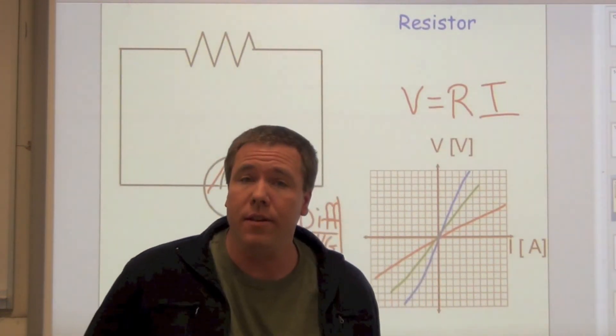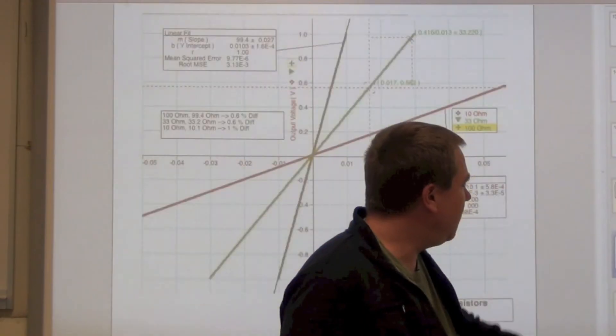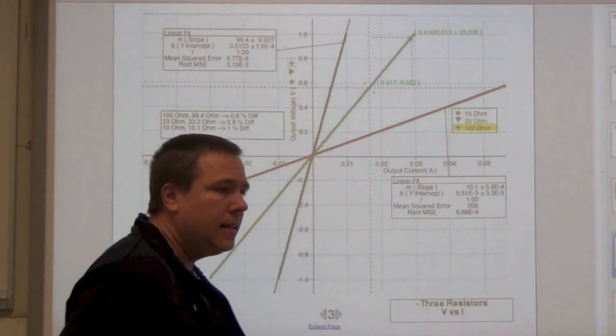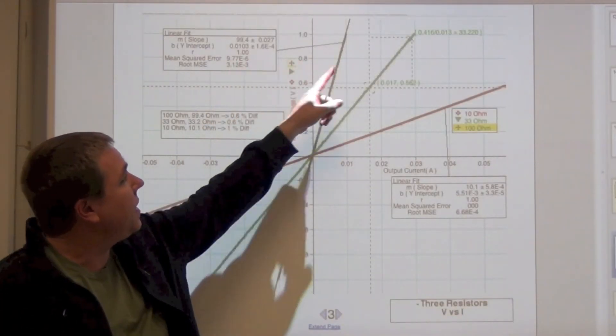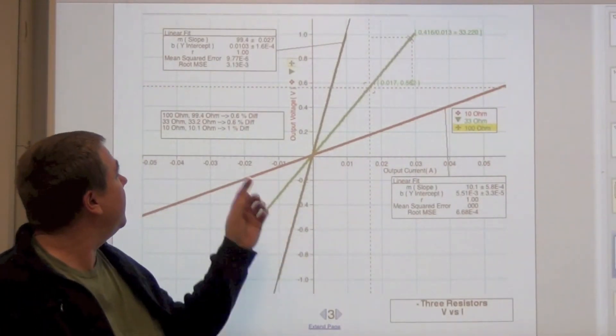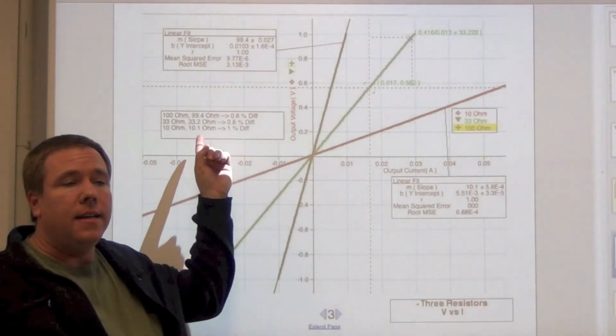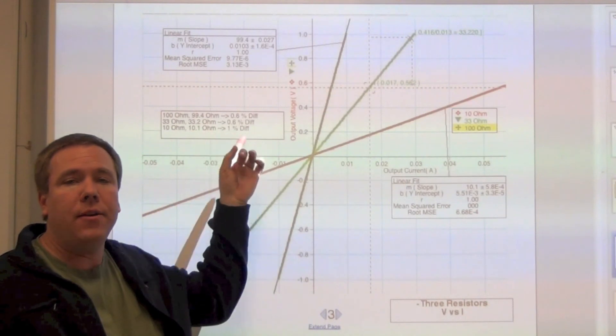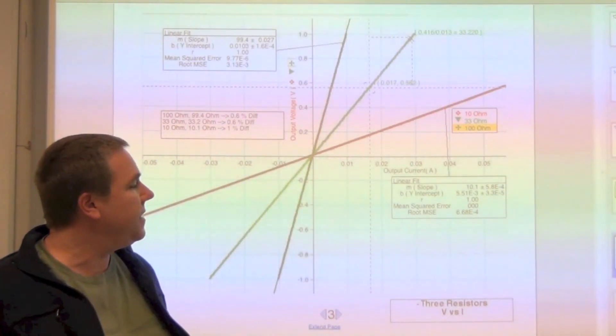And do that for the 33 and the 100 ohm. Mine kind of looks like this, where I've shown the calculation for each line, and I've displayed each resistor with its value measured, and then the percent difference. That's fine.